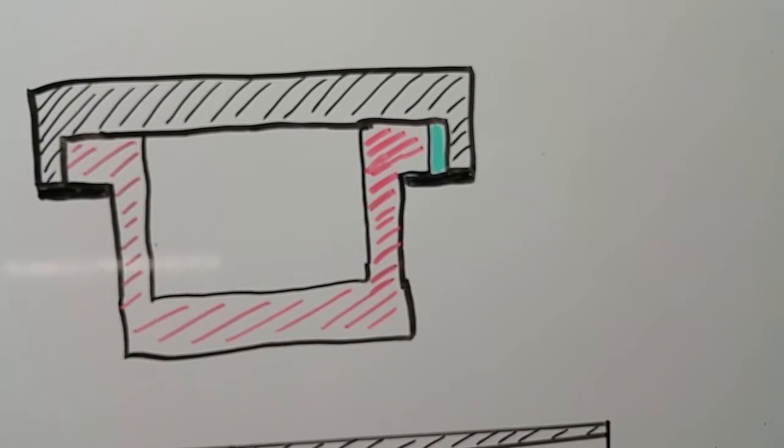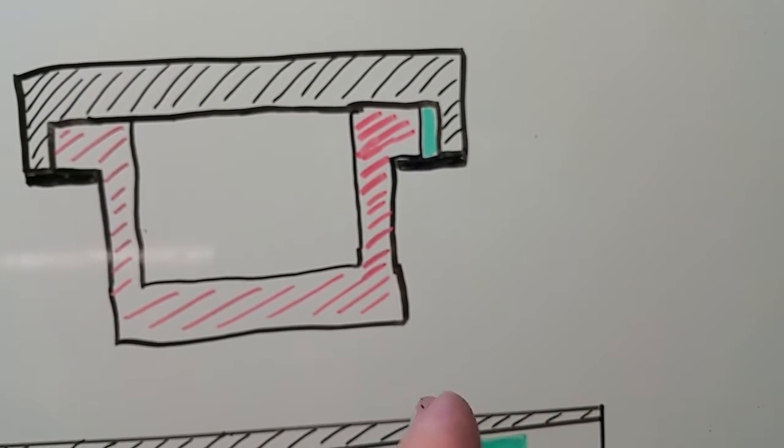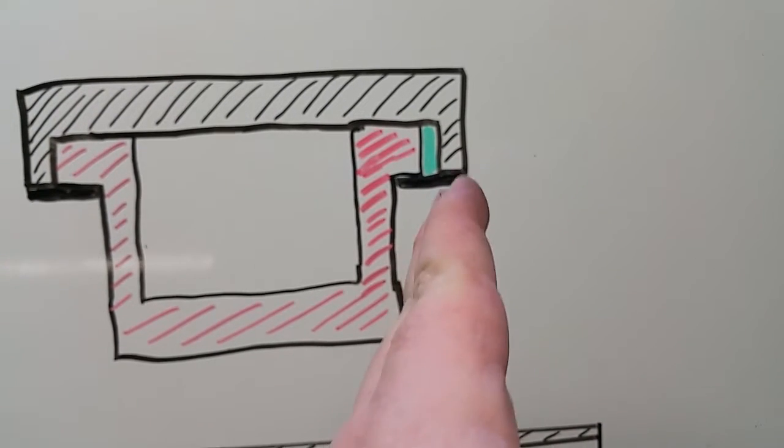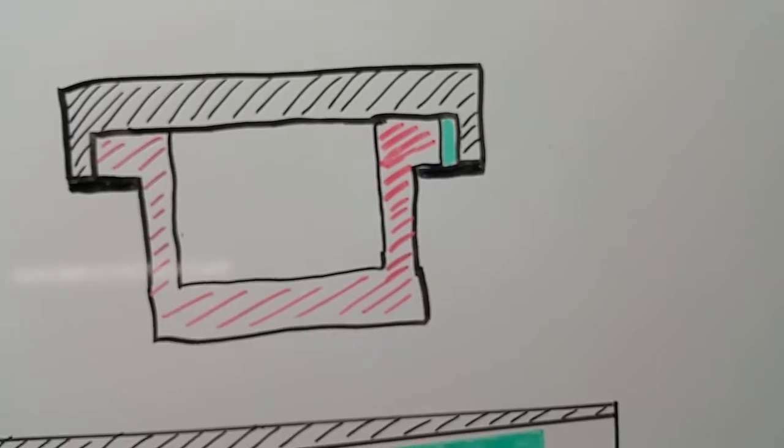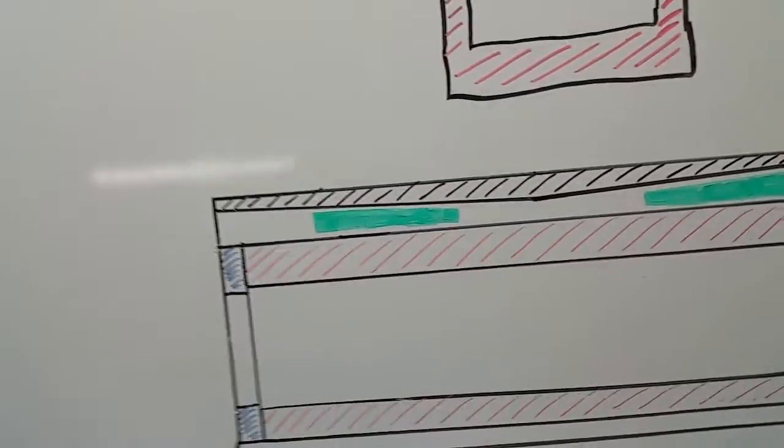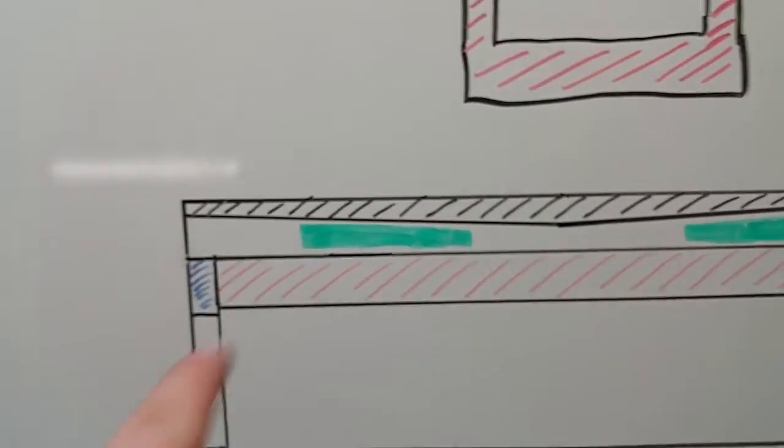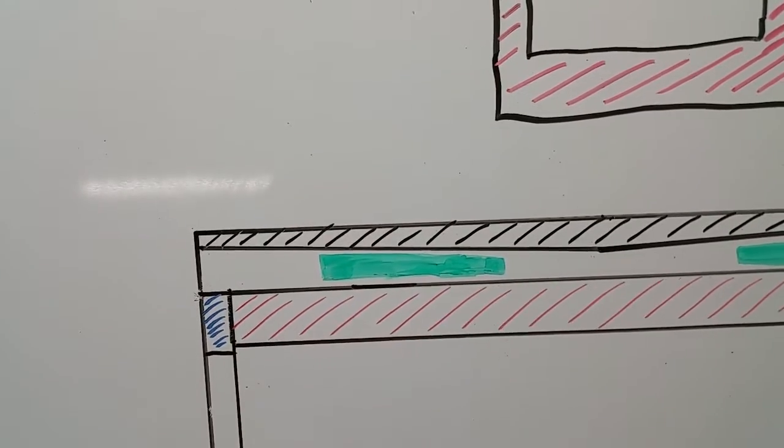And this gib is tapered because the table is tapered and the way is straight. So, the gib has to match the angle of the table in order to be straight with the ways. And when you adjust the gib in and out, it creates a wedge that can get tighter or looser. And here's what the shape of the gib looks like.